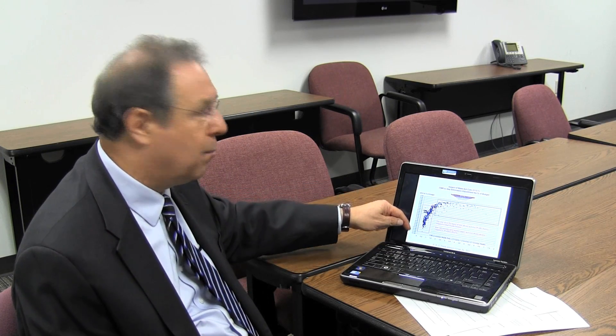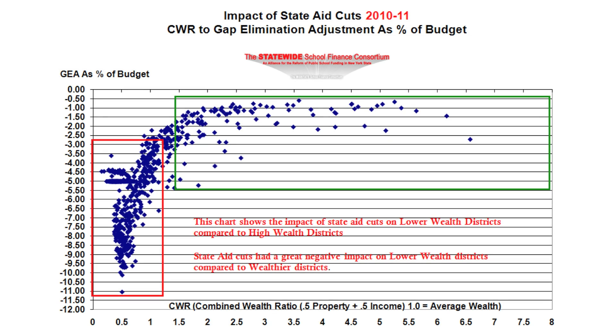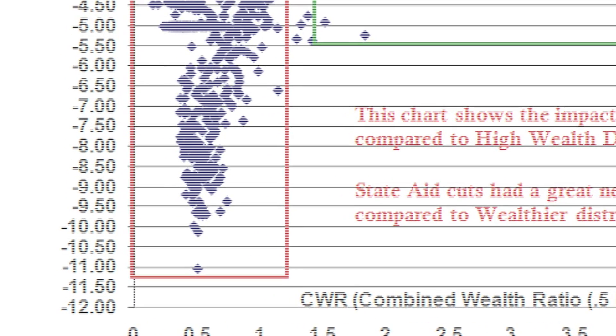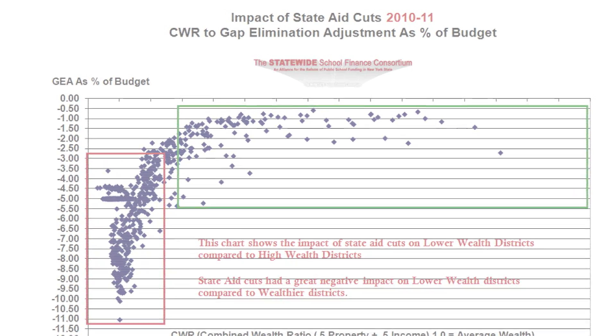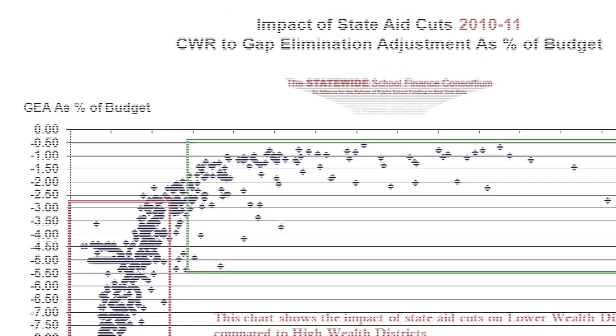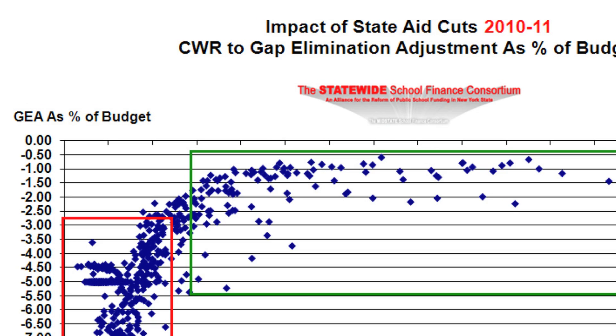I've stopped the chart at 8 even though it goes up close to 30, because it proves the point. Increasing wealth goes this way, and increasing damage to your budget goes this way because of the cuts. As you can see in this red box, these are average to below-average wealth districts, yet their cuts are very draconian. This district right here would have to decrease its budget by 10%, taking 10% out of its own budget to make room for the cut. All these people are losing a tremendous amount of money to maintain their districts. Meanwhile, the wealthy districts' impact on their budget is a lot less.